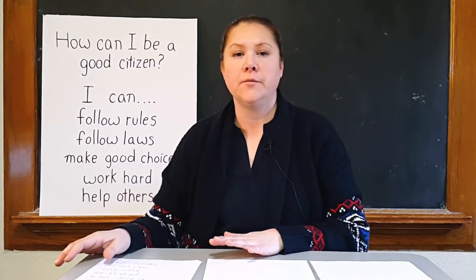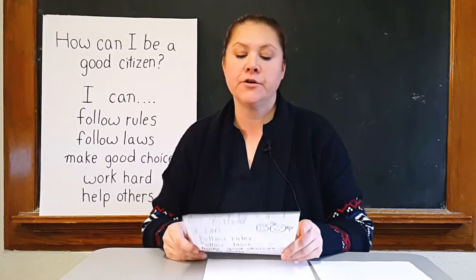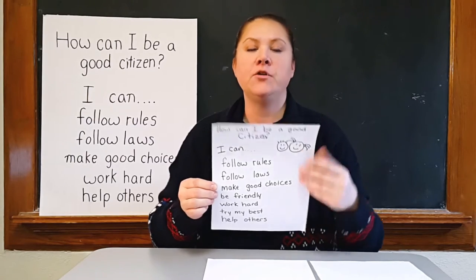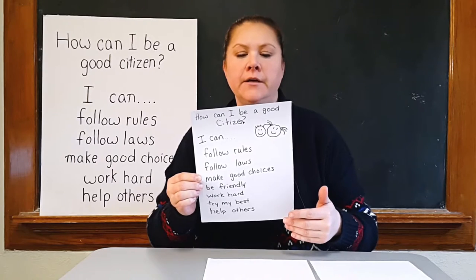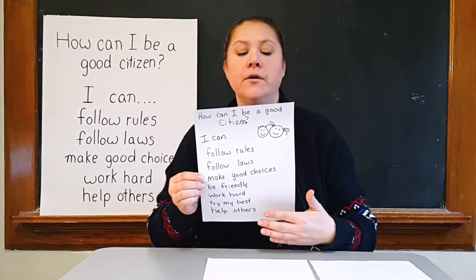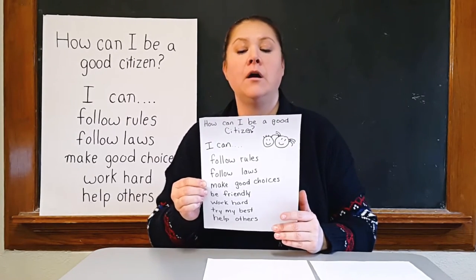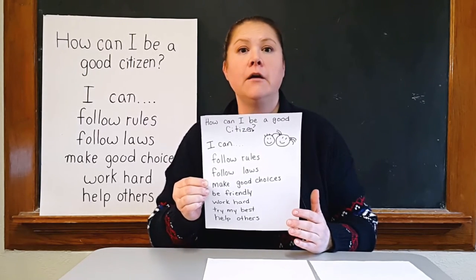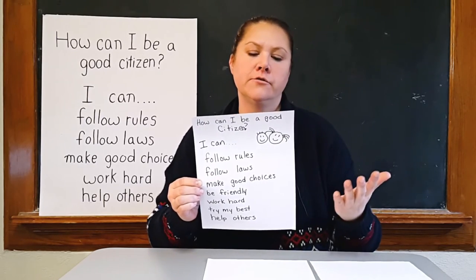The next thing you can do is you can help connect this to your classroom management and behavior plans for your students. If you keep your list posted in your classroom or in the area that you're teaching, it's a good reference point for them. So if they're perhaps not being good listeners or not making good choices, you can ask them: can you tell me if you are being a good citizen? What can you do to be a good citizen? Can you make a different choice so that you can be a good citizen in our classroom?